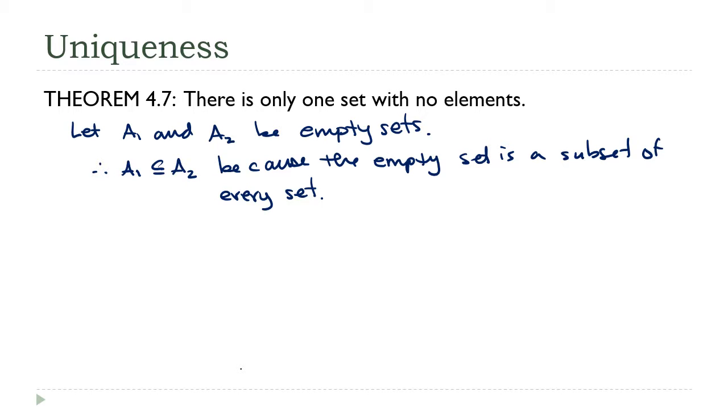But that works the other way around as well. For the same reason, A₂ must be a subset of A₁. Remember all those proofs we did in the last lecture - we showed that if A is a subset of B and B is a subset of A, then the two are actually equal.